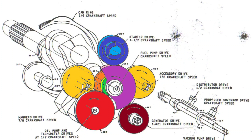The starter drive in blue is geared to one and a half times crankshaft speed — it turns faster than the crankshaft because you want that shaft to spin quickly when starting. The dark red generator drive runs at 1.421 times crankshaft speed, also faster than the crankshaft, in order to generate adequate electrical output.